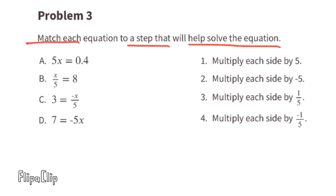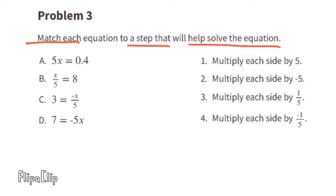Problem 3: match each equation to a step that will help solve it. For part a, we can get x by itself by dividing both sides by 5, or multiplying each side by one-fifth, since one-fifth of 5x is 1x, or x.